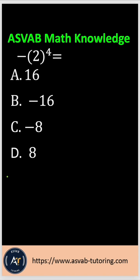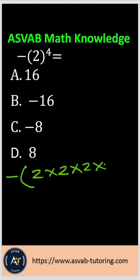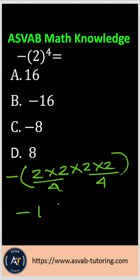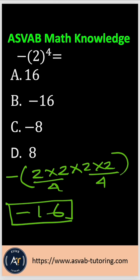So let's keep the negative sign outside. That gives you 2 times 2 times 2 times 2. So 2 times 2 is 4, and 2 times 2 is 4. Then 4 times 4 is 16, so that gives you negative 16. The correct answer is option B.